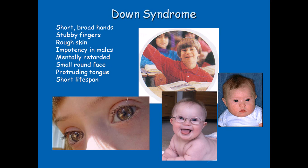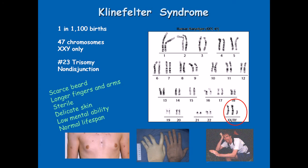Individuals with Down syndrome may look normal during childhood, but as they get older, mental retardation starts to take over. Klinefelter syndrome occurs in one in 1,100 births — it's pretty common. In this case, individuals have XXY sex chromosomes instead of the normal XX for female or XY for male. It is a trisomy of the 23rd chromosome, again the effect of non-disjunction. They have scarce beard, very long fingers and arms, delicate skin prone to rashes, and low mental abilities. Lifespan is normal but moody.